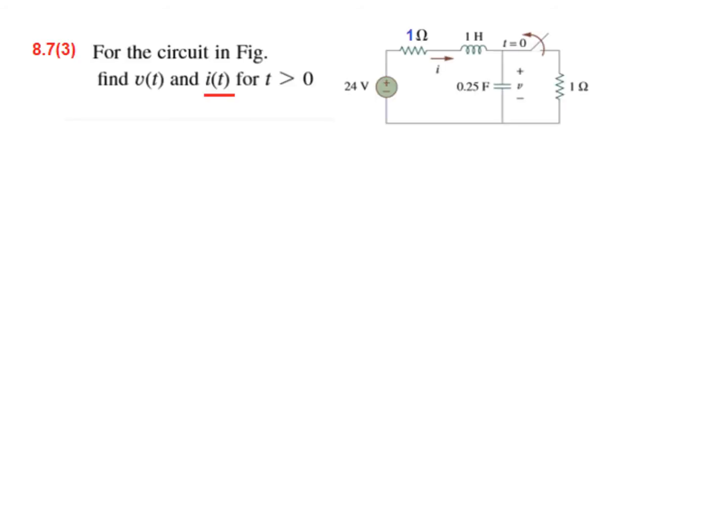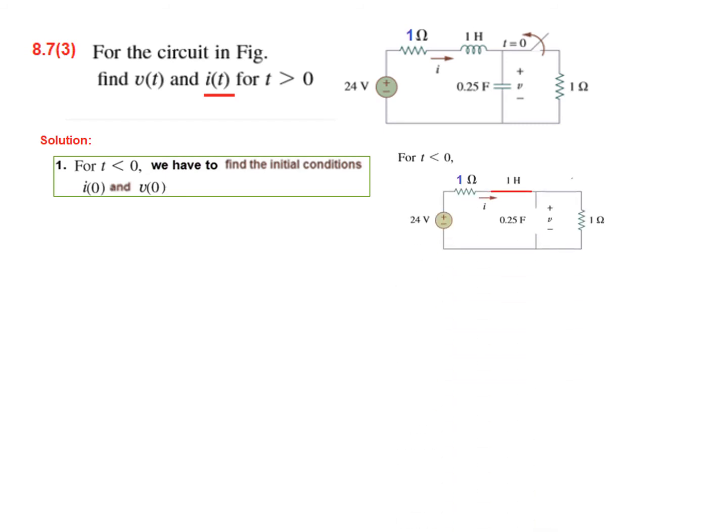Again same question. The only change here is the value of resistance here, and it is now 1 ohm. Let us see what is its effect. Technique remains same. Find I0 and V0. This is the circuit. Inductor short, capacitor open. This is connected. Now we have only 2 ohm resistance. So 24 divided by 2 will give the I0. So I0 is 12. And 12 multiplied by 1 will give this voltage V0. So it is 12 volt. First part.